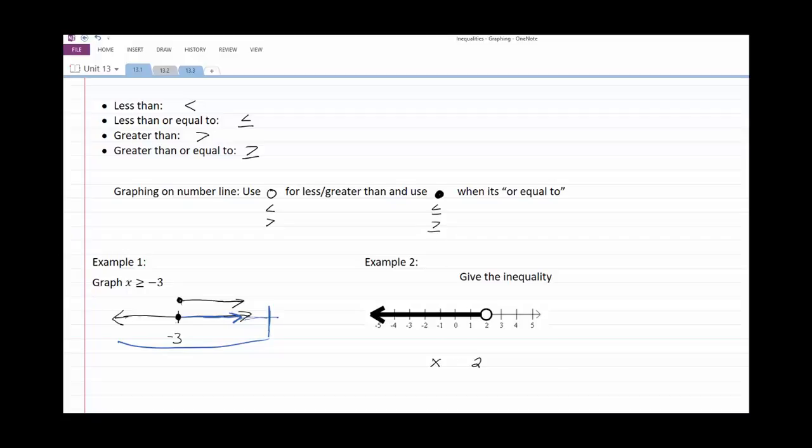We do not want to use the equal sign because it's an open dot, and so we have x is less than two.